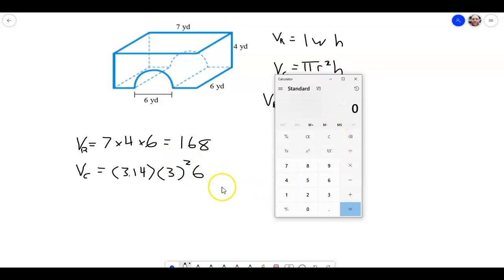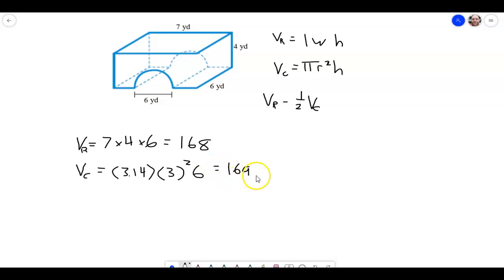And when we put this in our calculator here, we're going to have, we'll do the squared first. So 3 squared is 9, and then we're going to multiply that by 6, and times 3.14. And that's 169.56. So it's equal to 169.56.